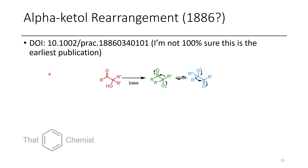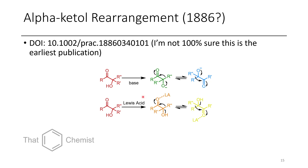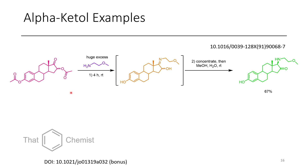The next reaction is the alpha ketol rearrangement. In this base-mediated version, the ketone and hydroxy group essentially swap through the shift of an R group. The migratory trend is similar to Baeyer-Villiger, but the product must be more stable than the starting material — so ring expansions or contractions are substrate-specific. A Lewis acid-mediated variant also exists with potentially different selectivity. A cool example is formation of an imine that spontaneously rearranges upon concentration, giving a chiral amine from a racemic alcohol starting material — yielding an alpha-amino ketone product.